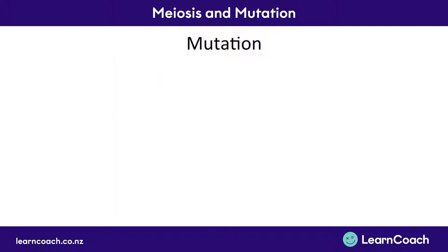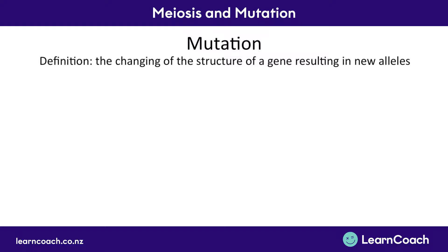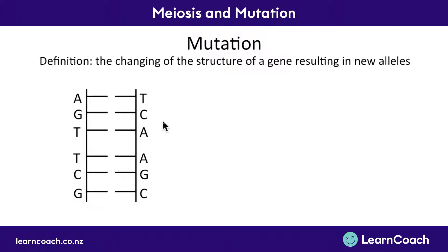The third thing we're going to learn is about mutation. We're going to zoom right down to the DNA level and look at how the structure of DNA can be altered to cause a mutation. The definition you need to know is: it's the changing of the structure of a gene — the DNA sequence — which results in new alleles, meaning the gene is going to express something new. You have base pairs along your DNA sequence, and the body reads these base pairs in sets of three called triplets.